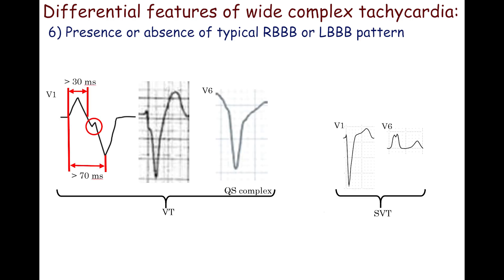Atypical patterns in the left bundle branch block morphology include QS in lead V6 or tiny Q-wave with high R-wave in lead V6 and dominant S-wave in lead V1 with following features: width of initial R-wave more than 30 milliseconds, time from onset of the R-wave to nadir of S-wave more than 70 milliseconds, slurred or notched S-wave.